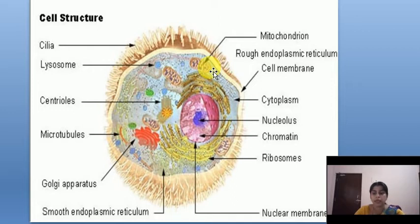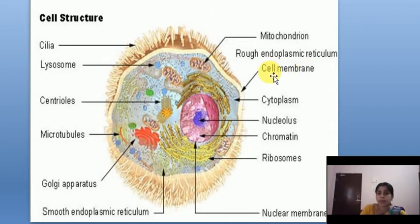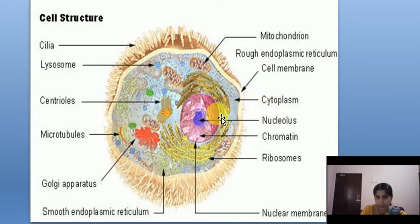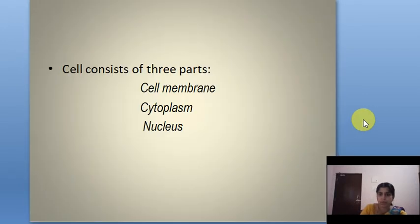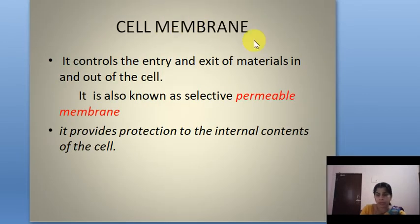A typical cell consists of three main parts. First is the cell membrane — the outer part. Next is the cytoplasm, the jelly-like substance inside. And the center one is the nucleus. These are the three main parts of the cell. Our first topic is the cell membrane, also called the plasma membrane.